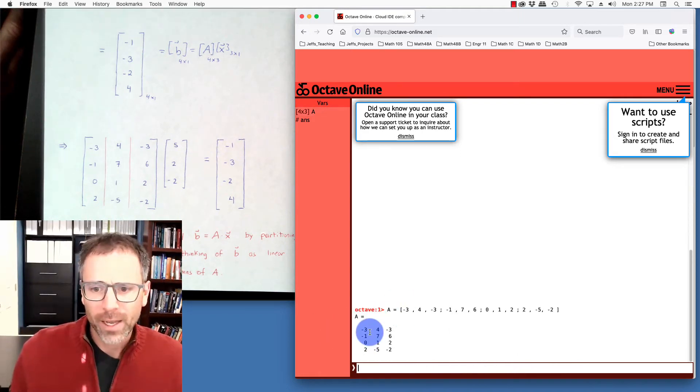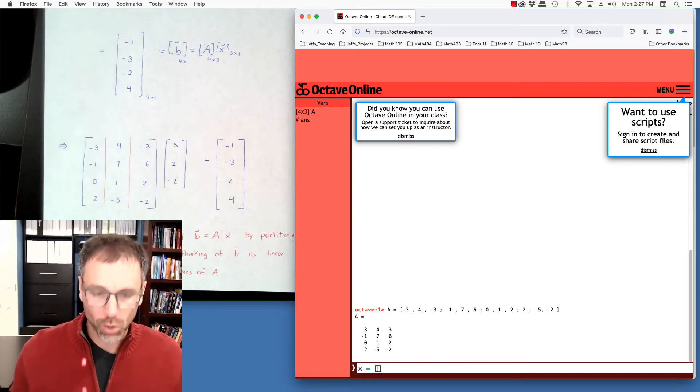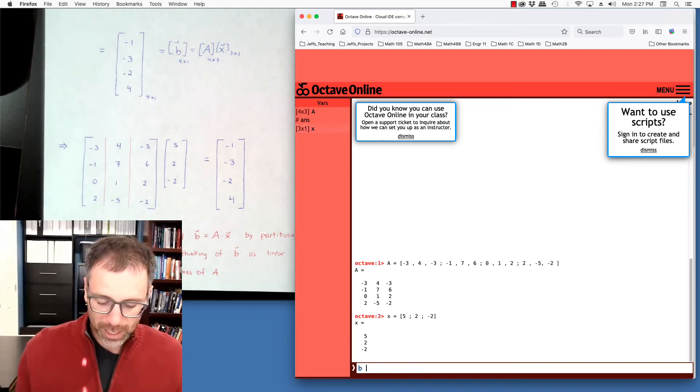And then we'll check negative 3, negative 1, 0, 2, 4, 7, 1, negative 5, negative 3, 6, 2, negative 2. Okay, let's go ahead and check x. And we'll go x was 5 semicolon down to the next row, 2 semicolon down to the next row, negative 2. And then we'll say b is equal to A times x.